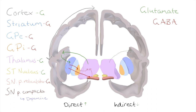Over to the indirect pathway now. As before, the cortex excites the striatum with glutamate, but that's where the similarities end. The striatum then releases GABA on the globus pallidus externa. It's connected to the subthalamic nucleus, but because it's inhibited, there's going to be a reduced inhibitory signal to the subthalamic nucleus, which allows it to provide a strong excitatory signal to the globus pallidus interna.